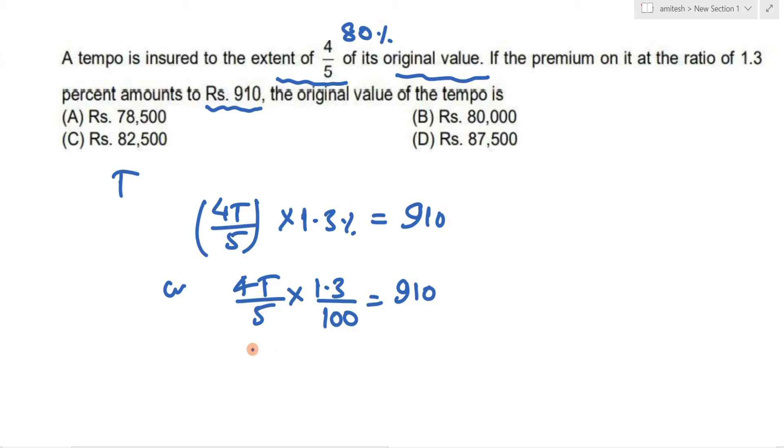From here you will get T equals 910 into 100 into 5 divided by 4 into 1.3. To remove the decimal, multiply the numerator by 10, so you will write 910 into 100 into 5 into 10 divided by 4 into 13.